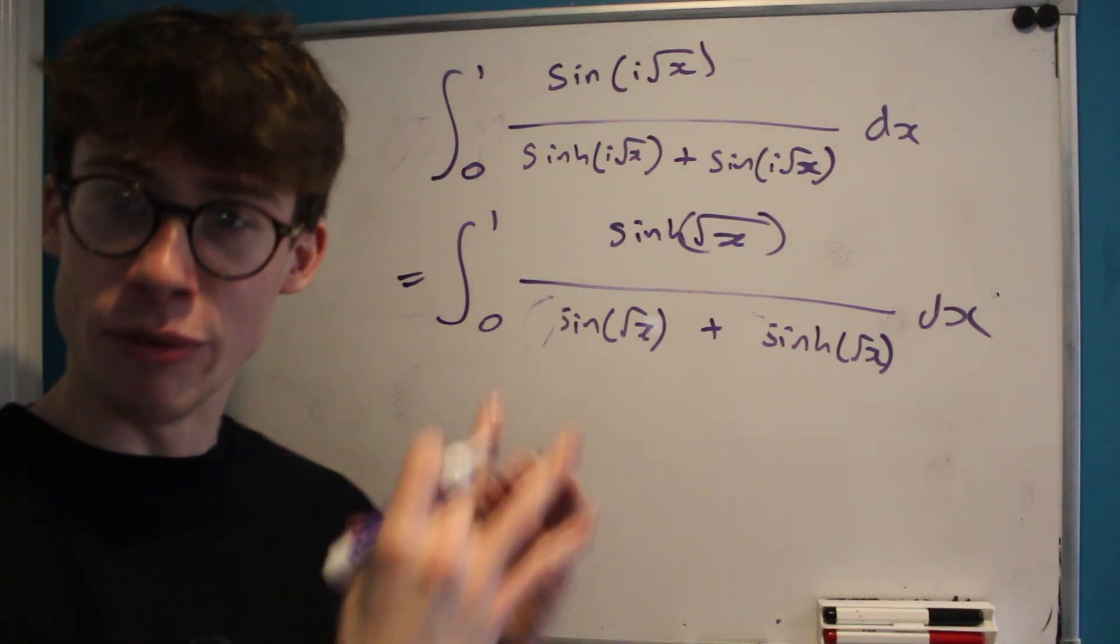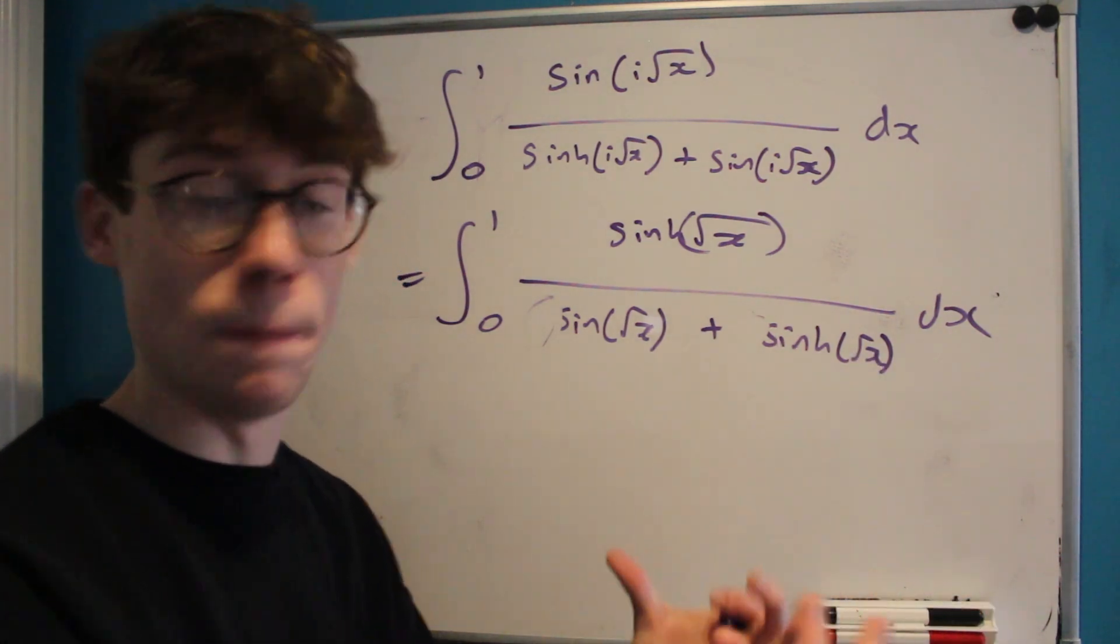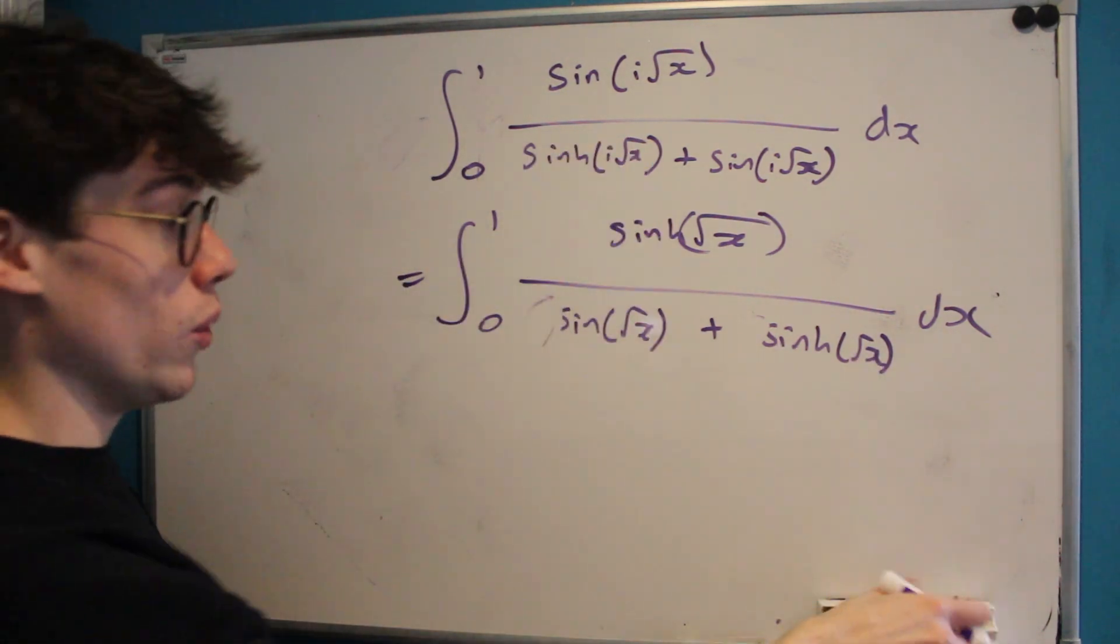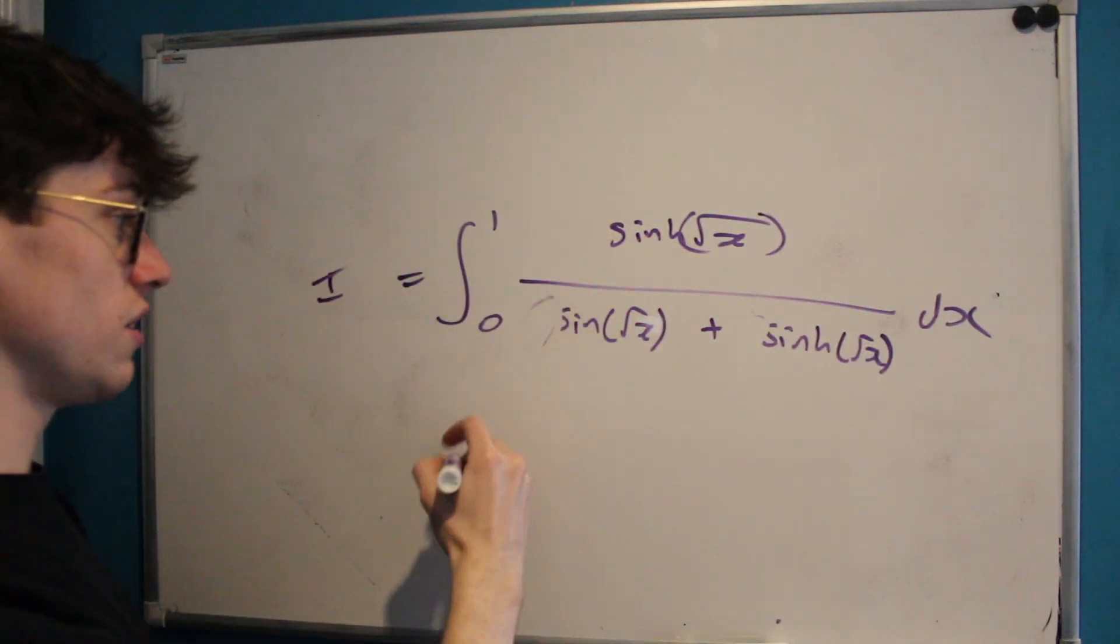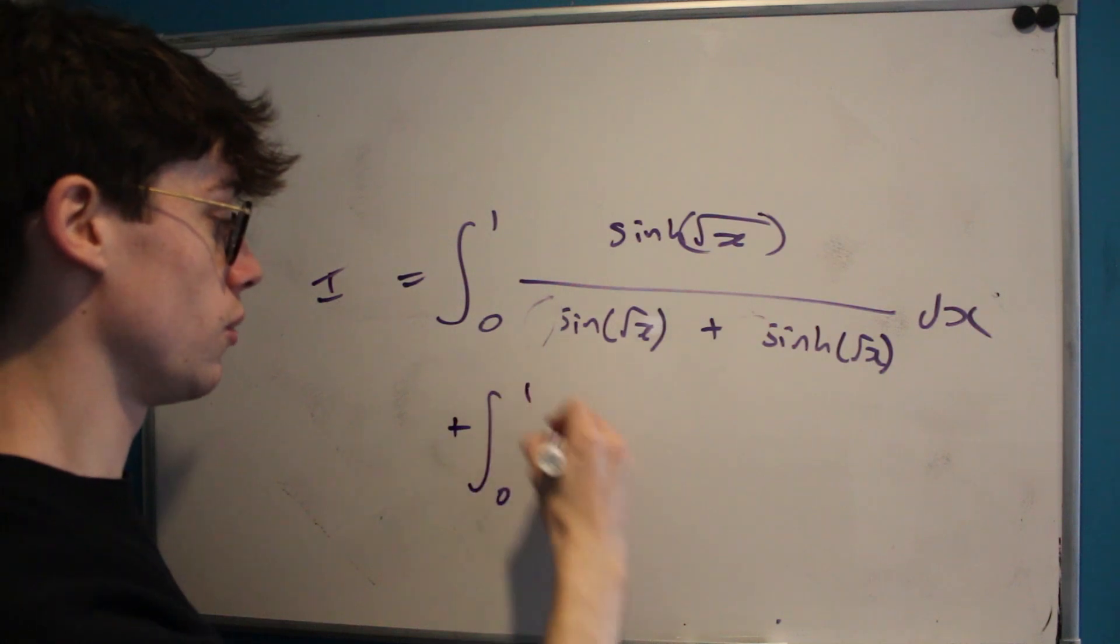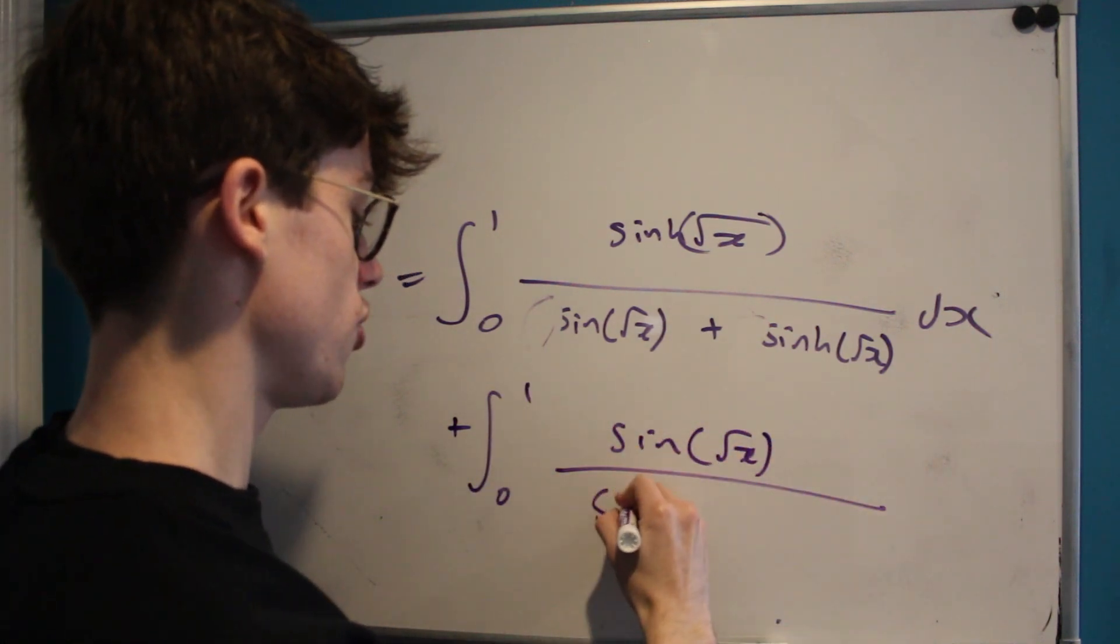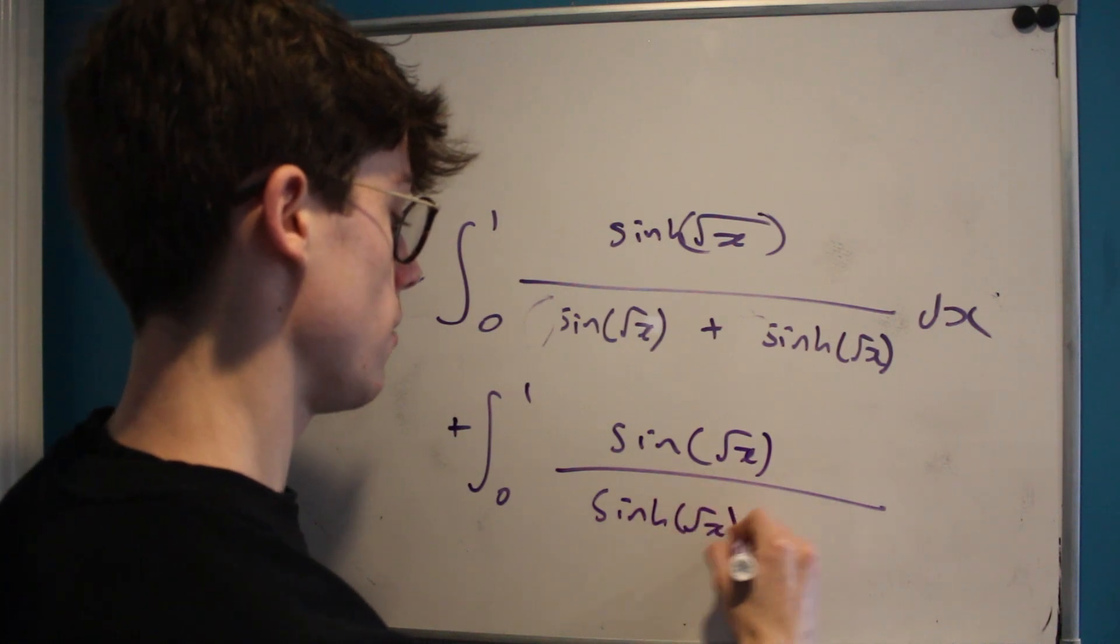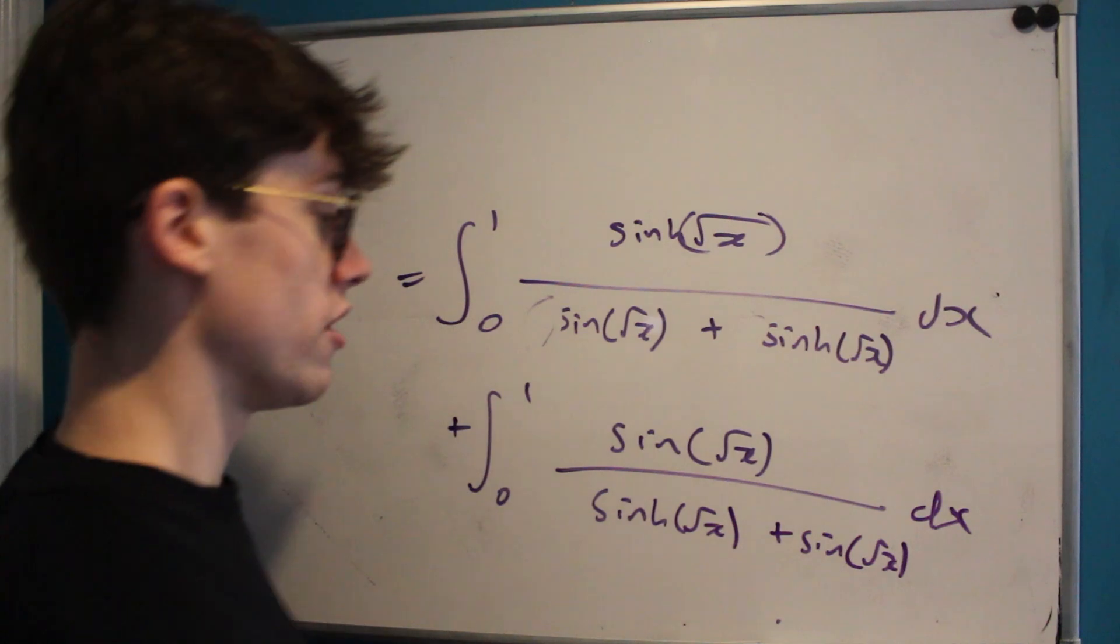The integral that we're looking to evaluate, the integral I, is equal to this integral plus the integral from zero to one of sine root x over sinh root x plus sine root x.